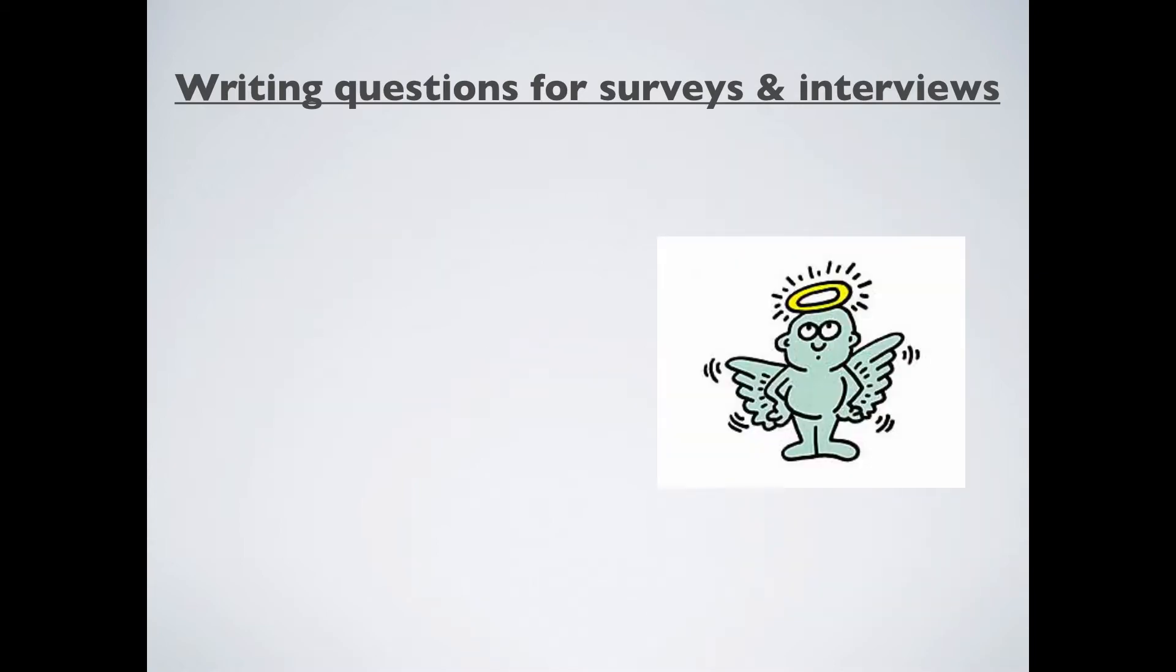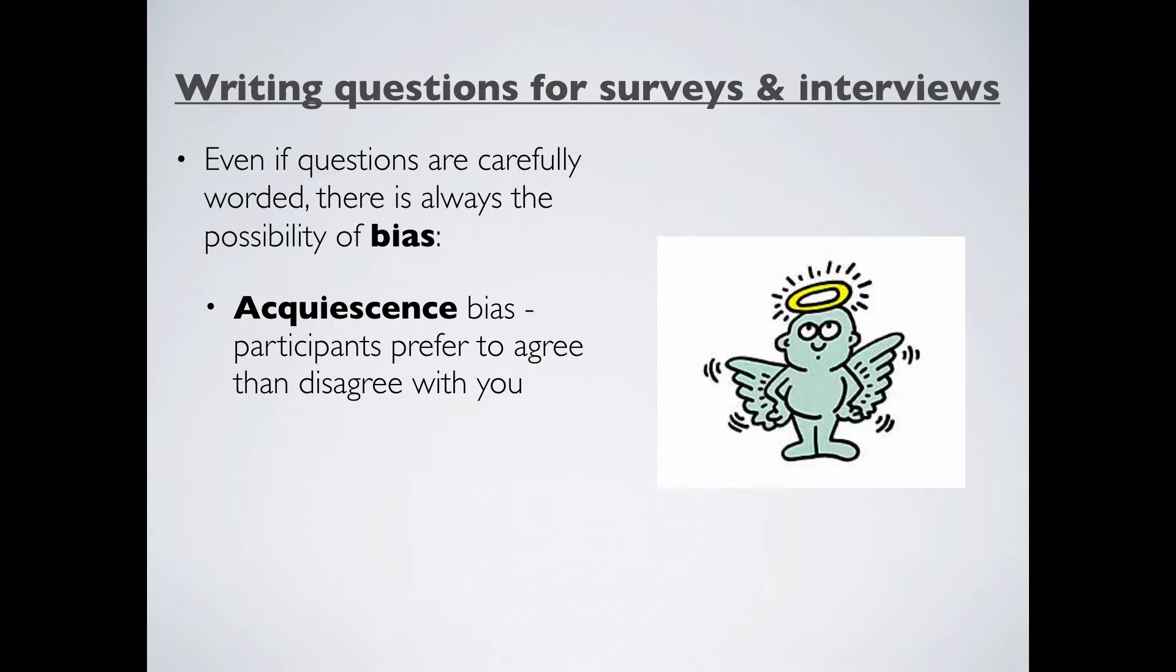The last thing we have to consider in here is something called bias. Even if our questions are carefully worded, there's the possibility that the data that we gather is going to be biased in some way. We're dealing with humans here. We're dealing with human participants and they will change their answers depending on lots of factors. Two of the main things that we have to consider here are as follows.